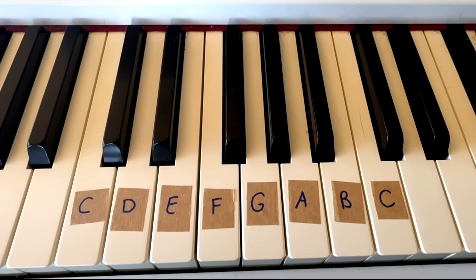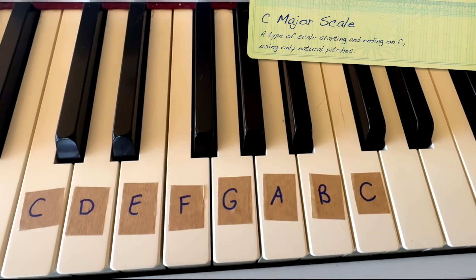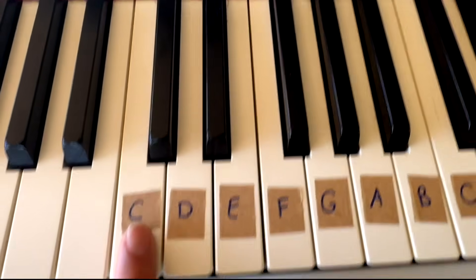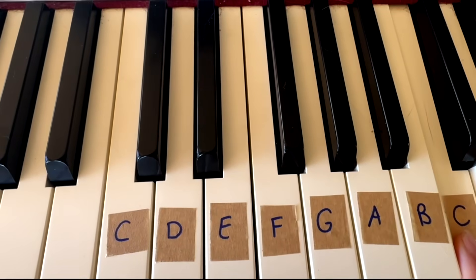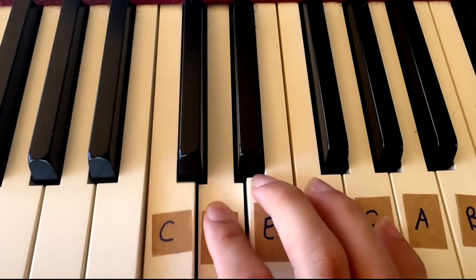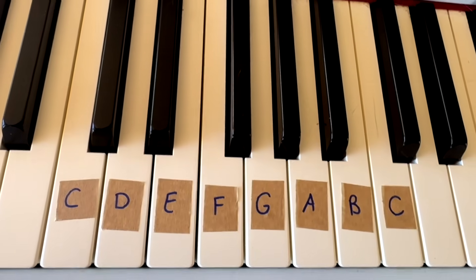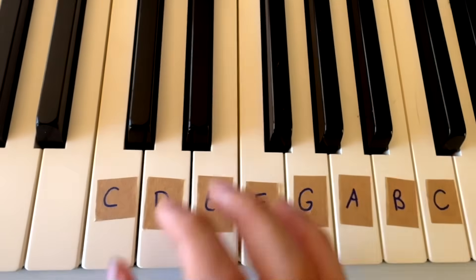So the first version of Twinkle Twinkle Little Star that I sang is in the key of C, and that just means it uses something called the C major scale. Now the C major scale is just the note C to C with all of the white keys or the natural notes in between. I can then use these notes to create a melody in the key of C.